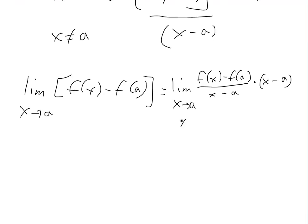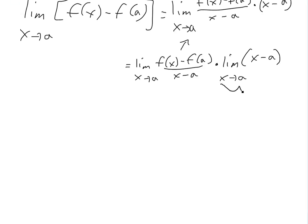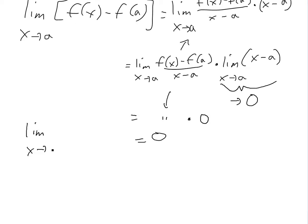Taking the limit of both sides as x approaches a and using the product law for limits — see the video link below — we get: the limit as x approaches a of [f(x) minus f(a)] divided by [x minus a], times the limit as x approaches a of [x minus a]. That second factor approaches zero as x approaches a, so the whole expression equals zero. Therefore, the limit as x approaches a of f(x) minus f(a) equals zero.